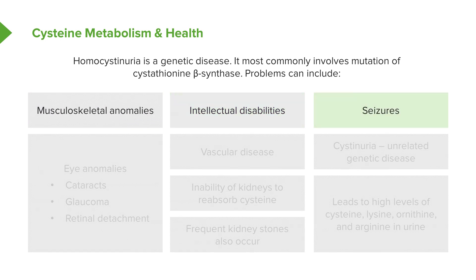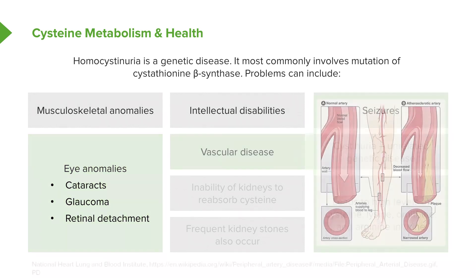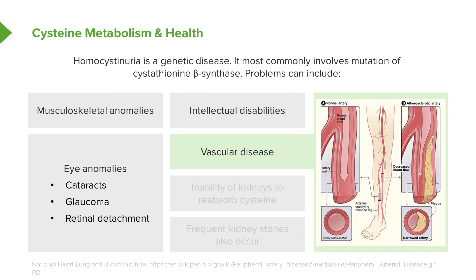Seizures can result. There are numerous eye anomalies that can arise. Vascular disease also occurs because we have a lot of homocysteine accumulating, as it's not being converted into cysteine in the process.